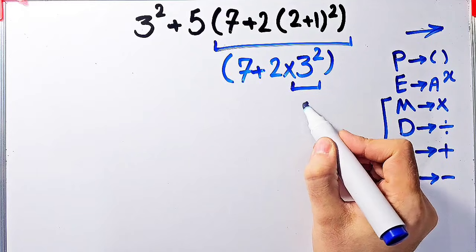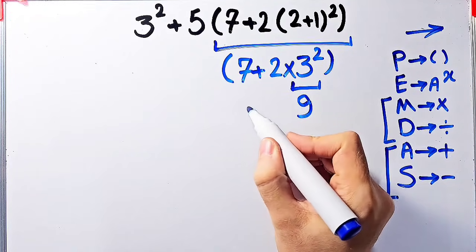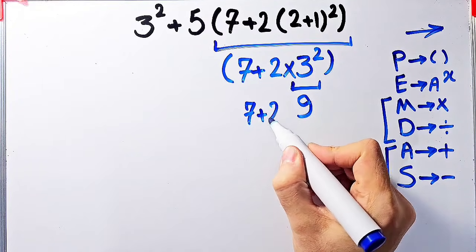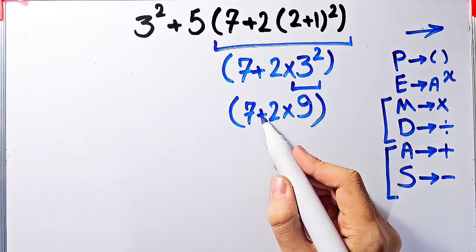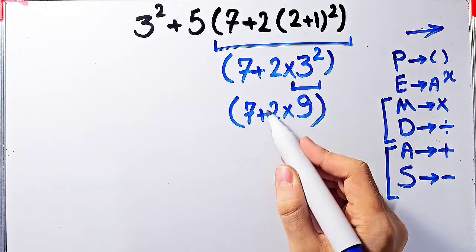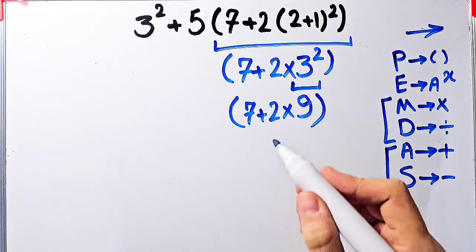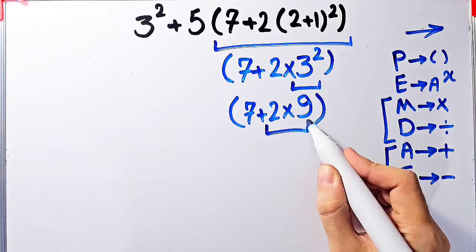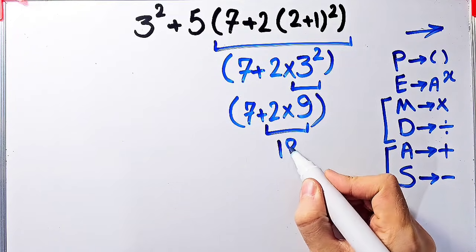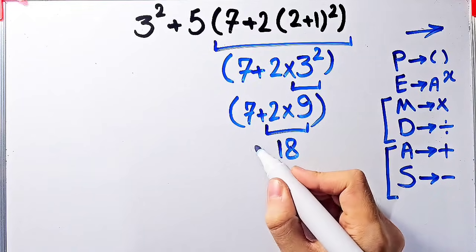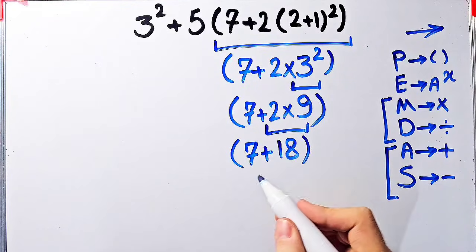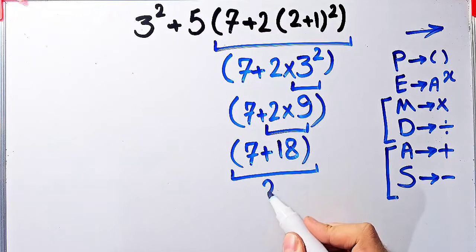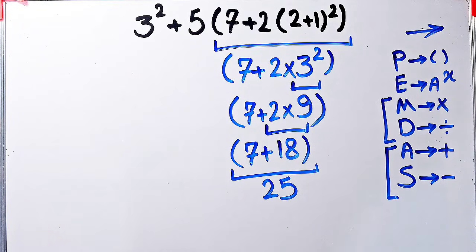Now inside the parentheses we have seven plus two, then times nine. We have addition and multiplication. First we simplify this multiplication: two times nine equals eighteen. Now we have seven plus eighteen inside these parentheses. Seven plus eighteen equals twenty-five. The final answer of this part equals twenty-five.